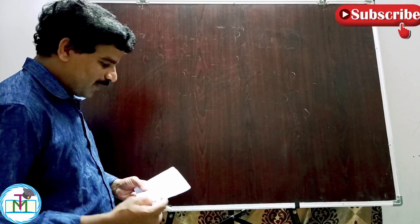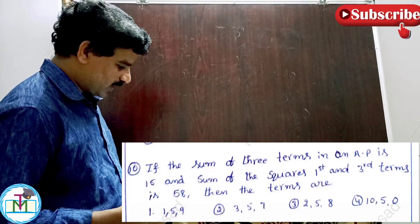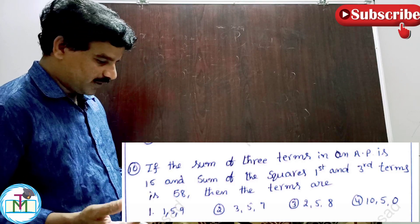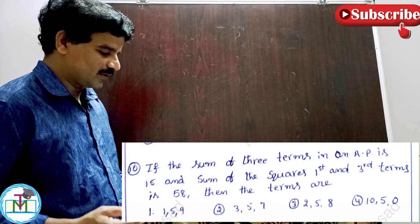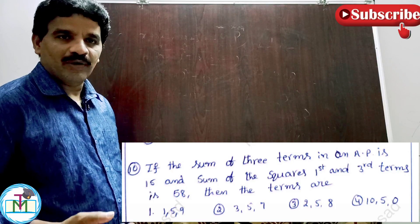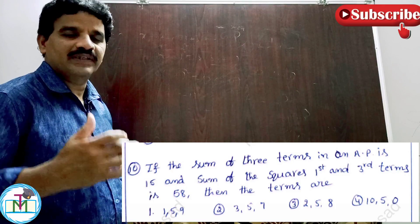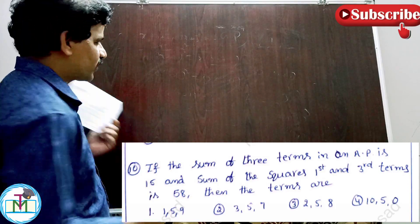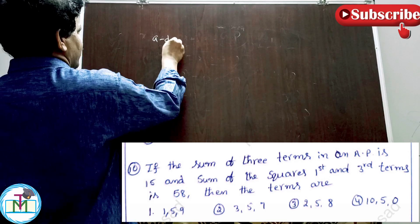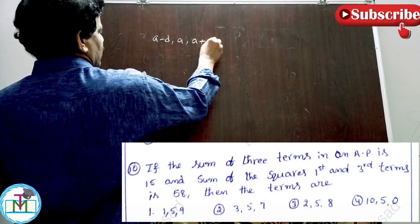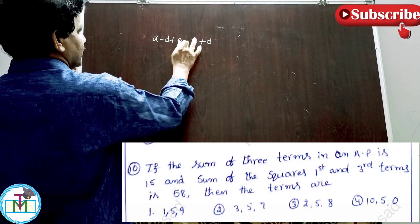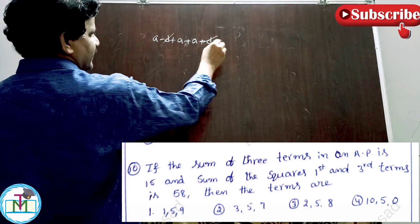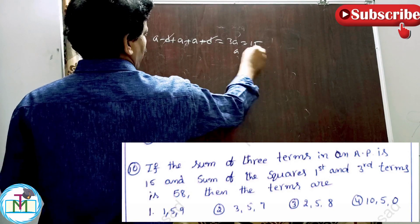Question number 10: if the sum of 3 terms in arithmetic progression is 15 and the sum of squares of the first and third terms is 58, find the terms. Take the three terms as A minus D, A, and A plus D. Their sum: (A minus D) plus A plus (A plus D) equals 3A equals 15, so A equals 5.